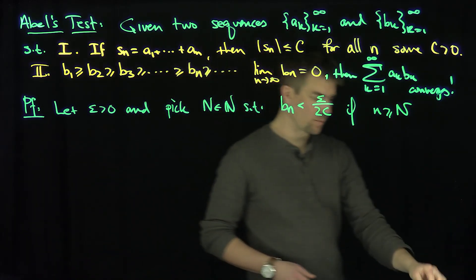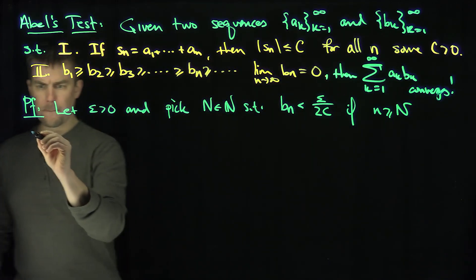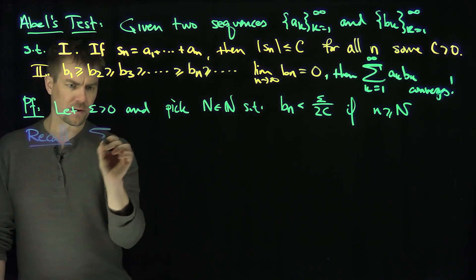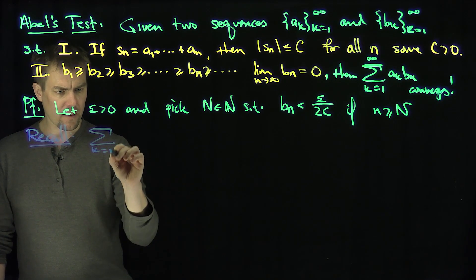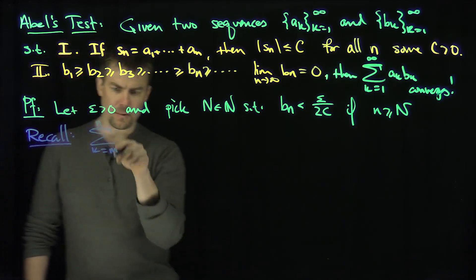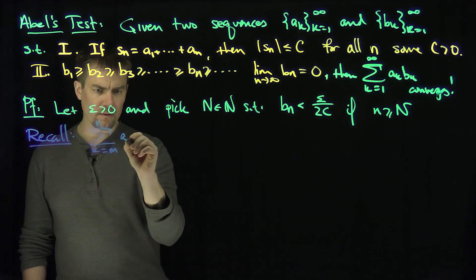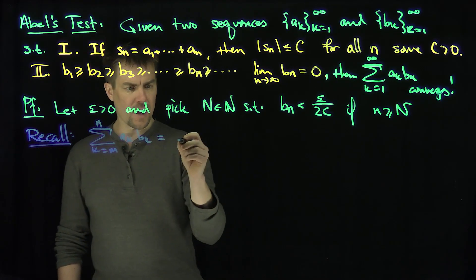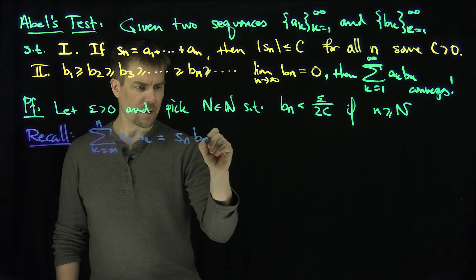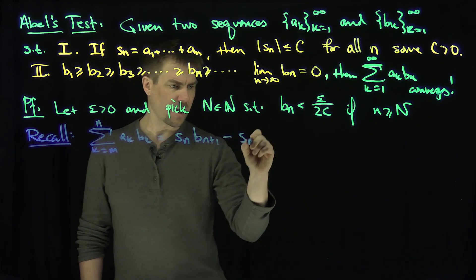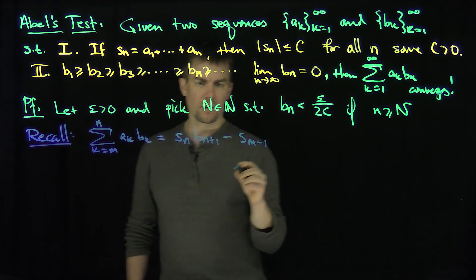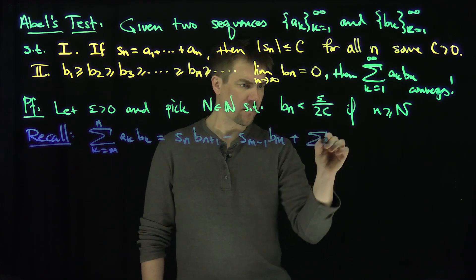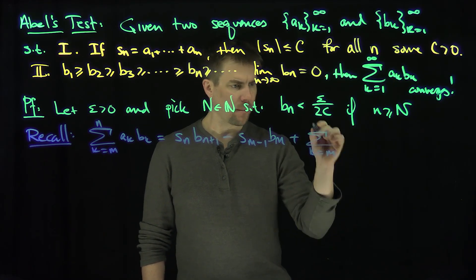Now let's recall summation by parts. Recall that the sum k goes from m up to n of a_k b_k is s_n b_{n+1} minus s_{m-1} b_m plus the sum k goes from m up to n.